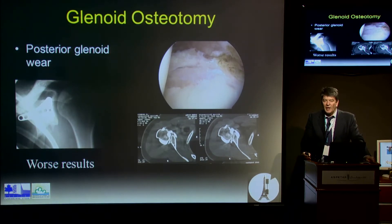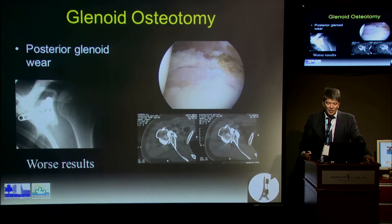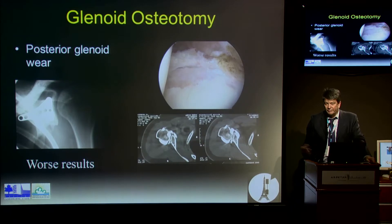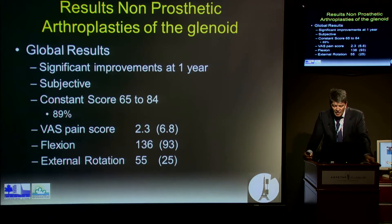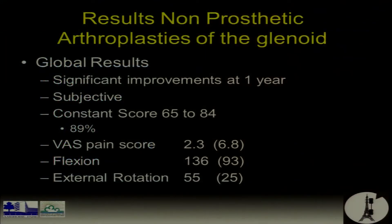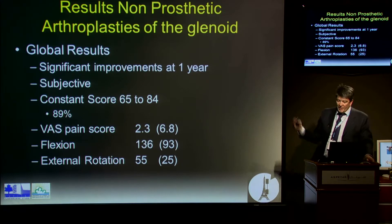It's not because you act on the bone and the glenoid that the head is going to go anteriorly, because the muscle imbalance is the most important factor. We've revised all our patients with these implants, and all our studies were failures. For non-prosthetic glenoid arthroplasty, patients were doing better at one year — subjectively — but then everything started to decrease. They were still painful at 2.3, flexion was 136 degrees, external rotation was 55 degrees at one year, and then all decreased.